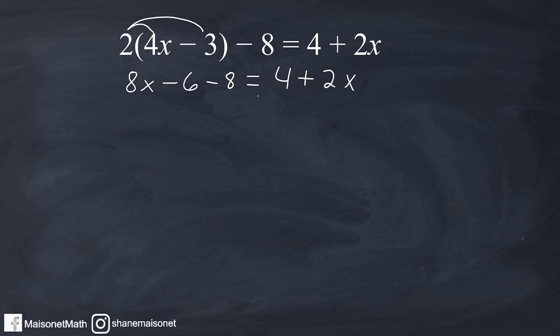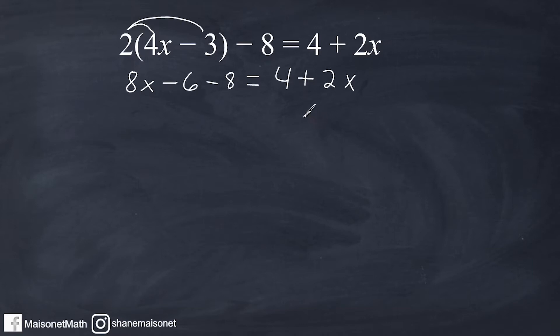Now that we have simplified our equation a bit, what I want to do is take every term with an x in it and move it to the left. And I want to take every term without an x, or a constant, and move it over on the right.